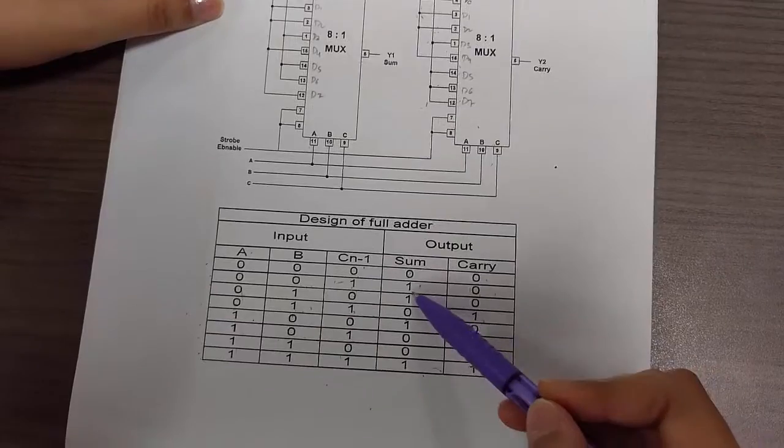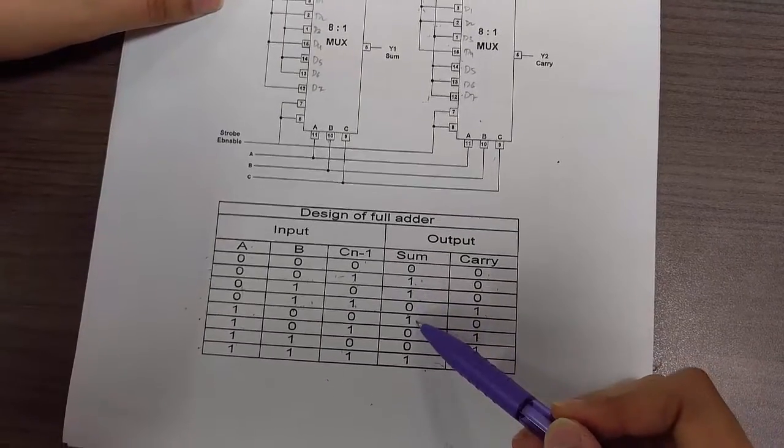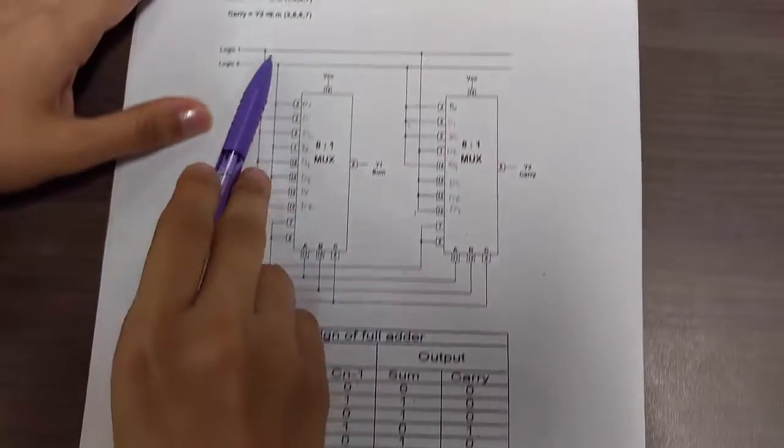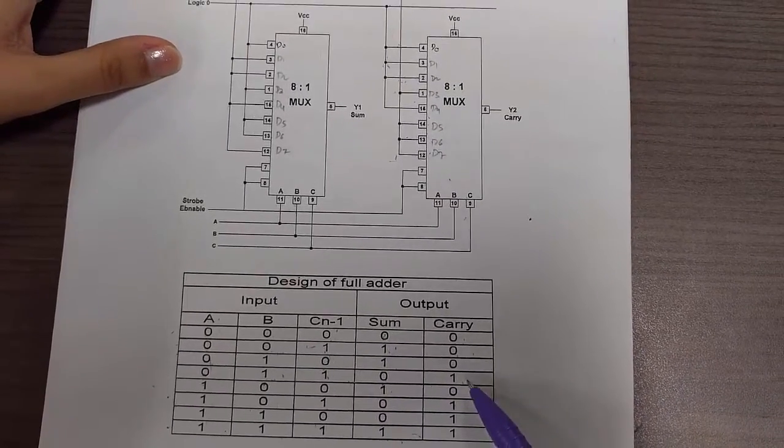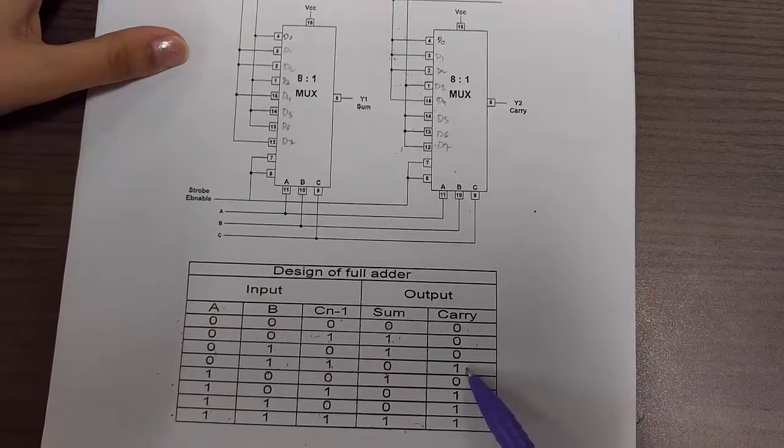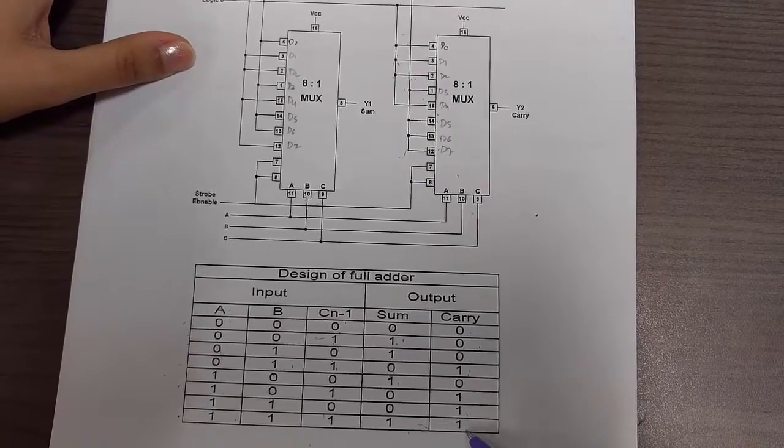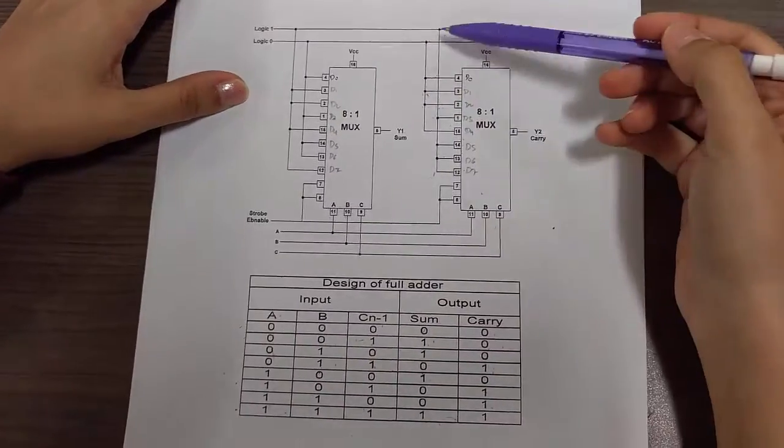For the sum circuit, data lines d1, d2, d4, and d7 are connected to logic 1. For the carry circuit, data lines d3, d5, d6, and d7 are connected to logic 1, and the remaining lines are connected to logic 0.